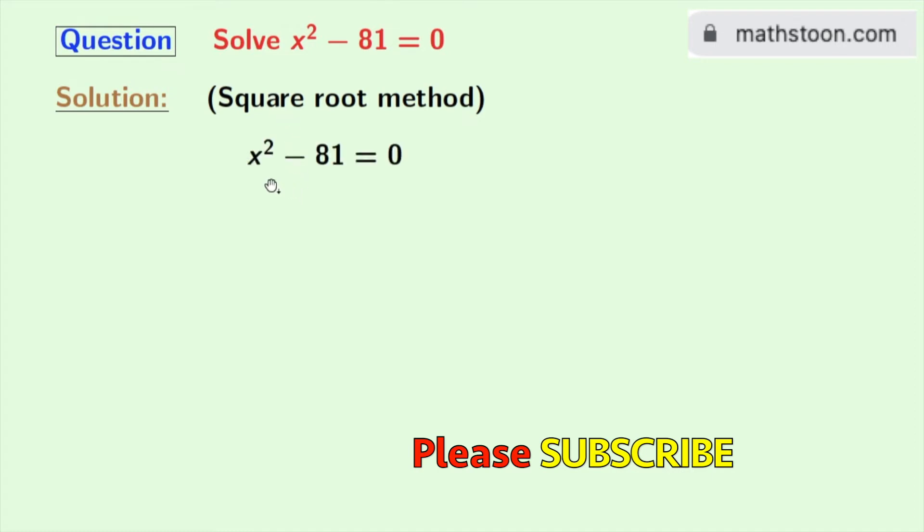Our given equation is x square minus 81 equals 0. Now we will rewrite this equation as x square equals 81. We know that 81 is 9 square.